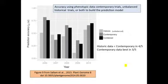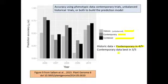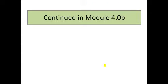They also compared whether the accuracy of genomic selection differed depending on whether you used only data from contemporary trials — which was balanced data for the training population — versus historic unbalanced data, or a combination of both. In most cases, building the model using only balanced data from contemporary trials was more predictive and produced higher GS accuracy than if you used the historic data. We'll continue this discussion in the second part of Module 4.